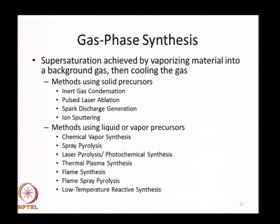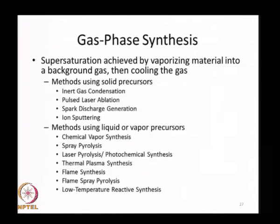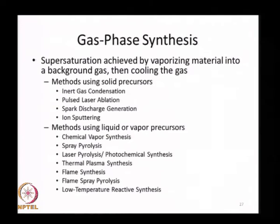Gas phase synthesis is similar to vapor phase synthesis but uses a background gas into which material is vaporized, with super saturation achieved by appropriate cooling. These methods are classified based on precursor form. Methods using solid precursors include inert gas condensation, pulsed laser ablation, spark discharge generation, and ion sputtering. Methods using liquid or vapor precursors include chemical vapor synthesis, spray pyrolysis, laser pyrolysis, photochemical synthesis, thermal plasma synthesis, flame synthesis, flame spray pyrolysis, and low temperature reactive synthesis.